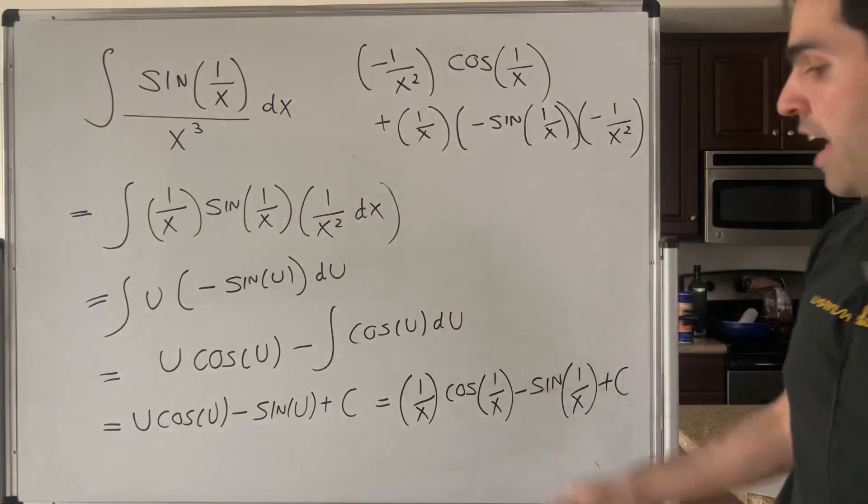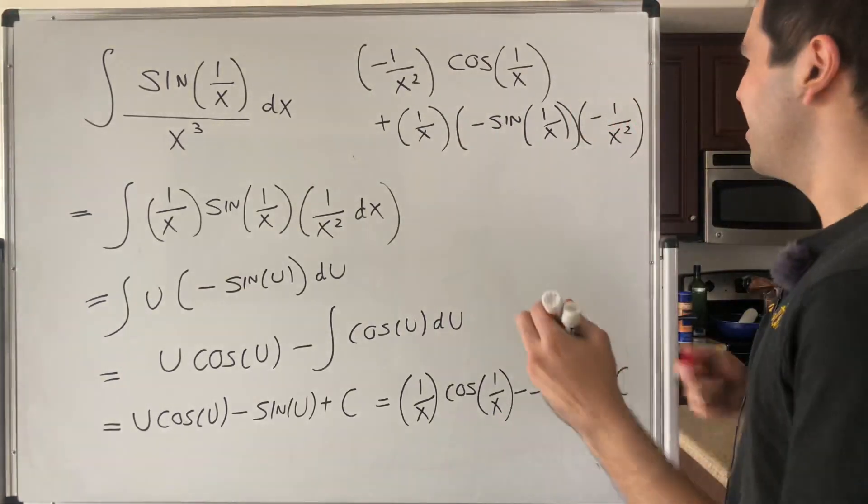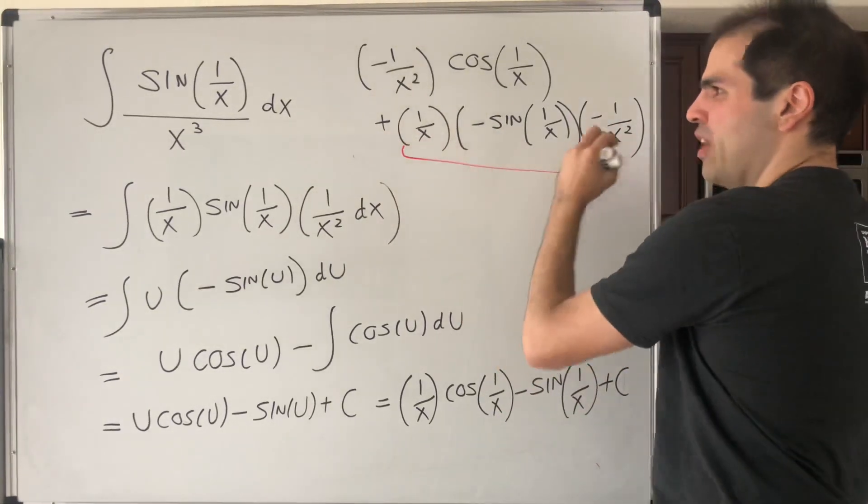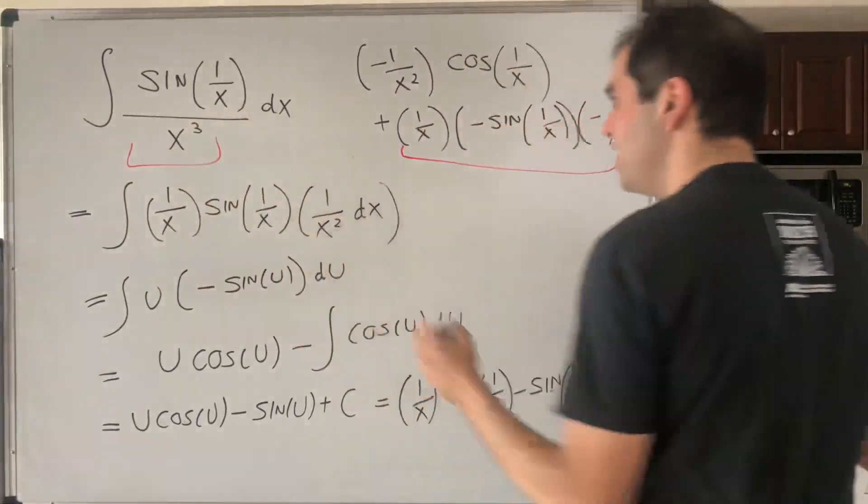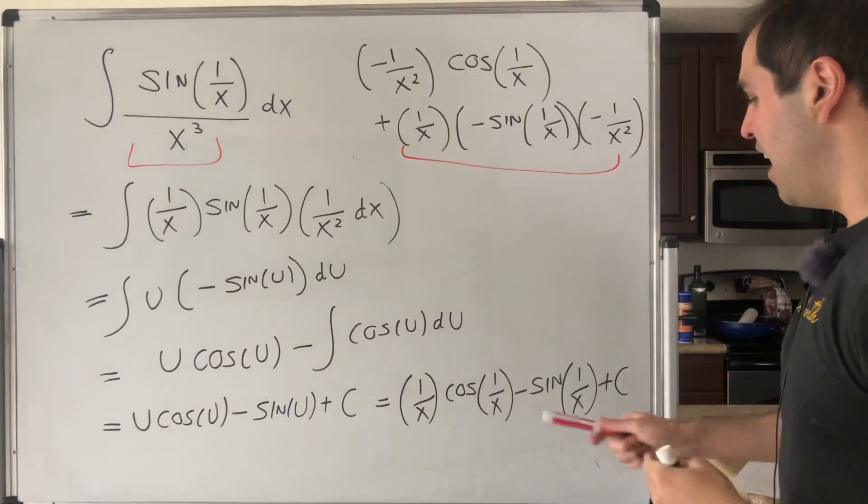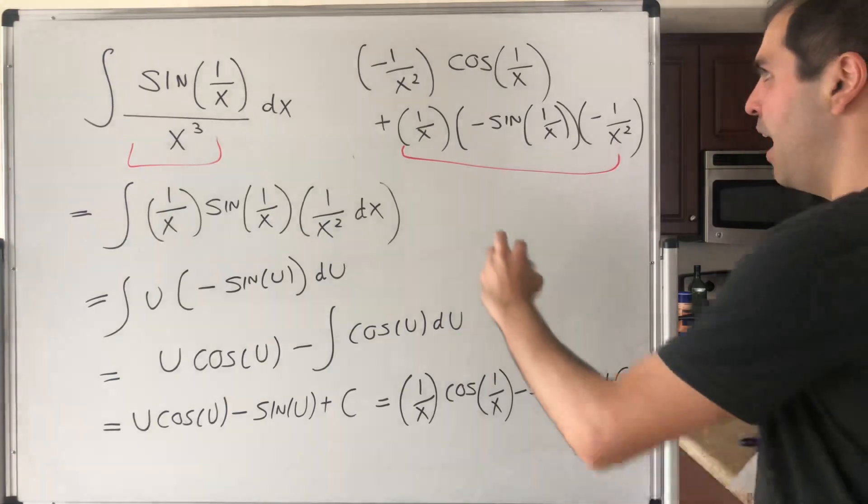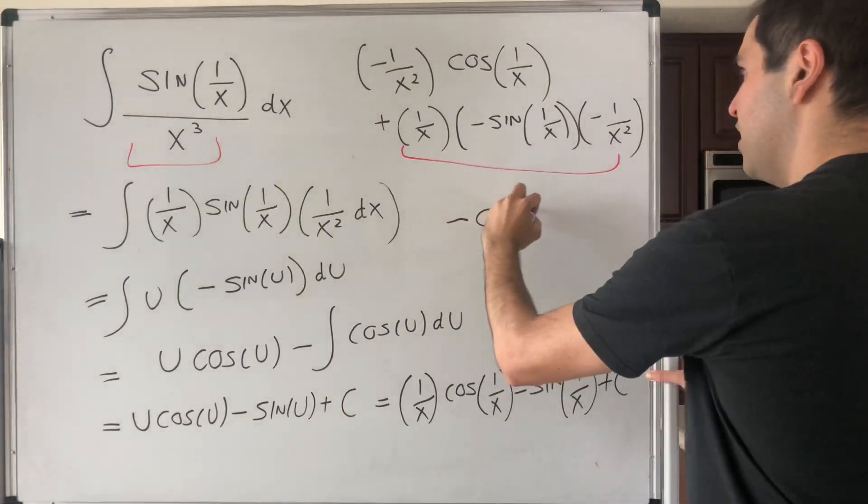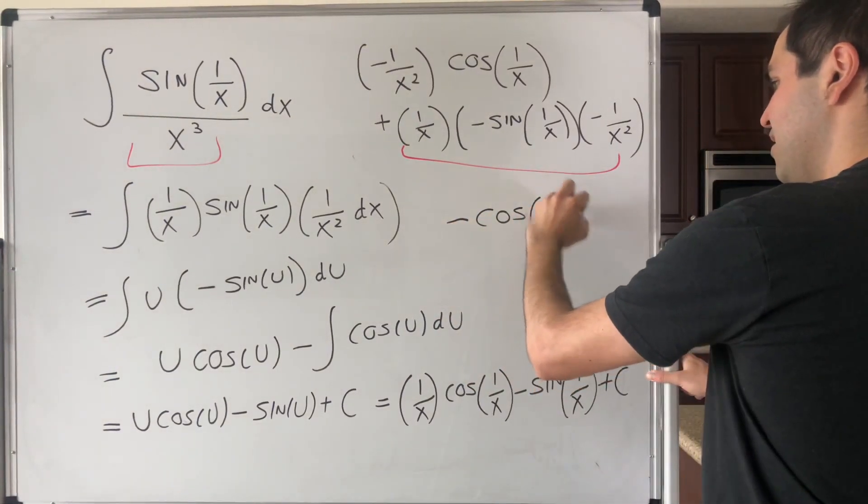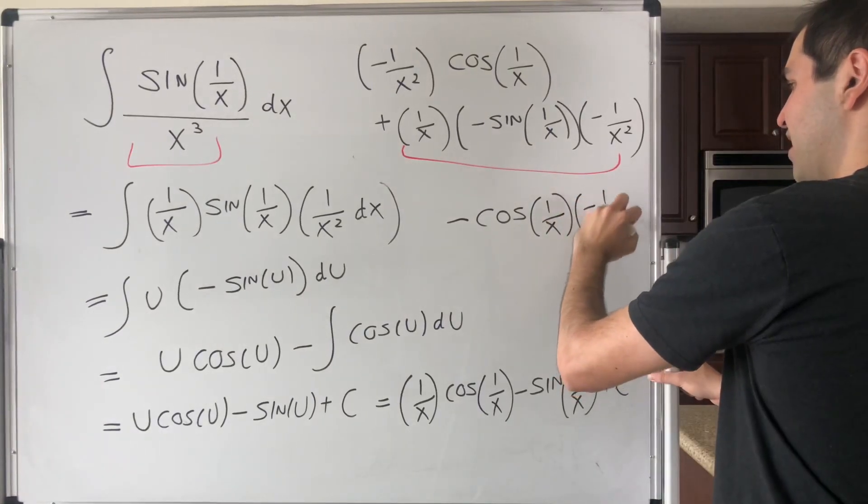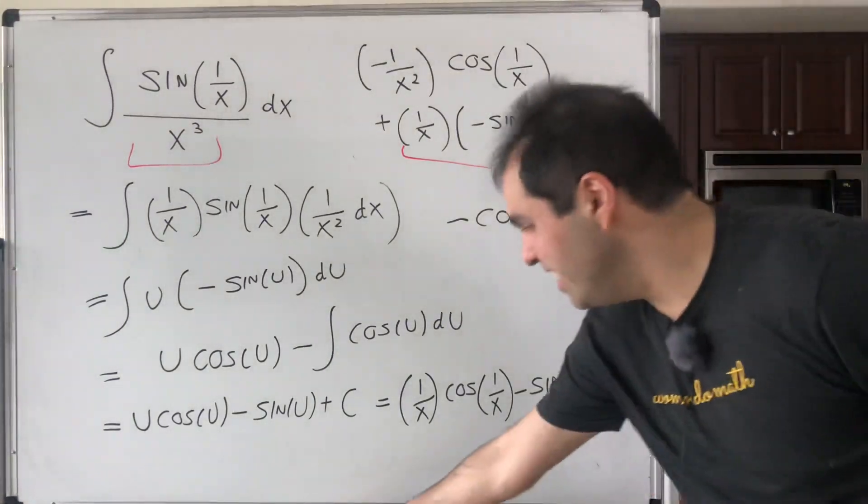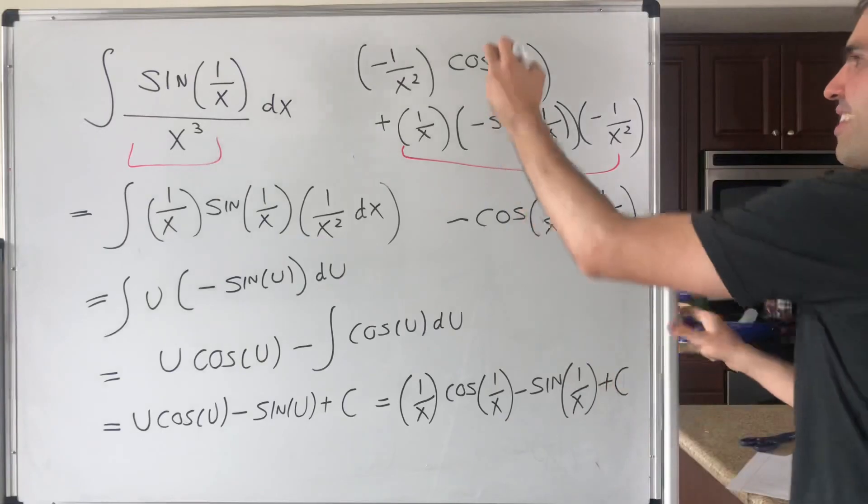which incidentally, or I guess hopefully, becomes 1 over x cubed sine of 1 over x, so our function. And then finally, we have minus cosine of 1 over x times minus 1 over x squared, which conveniently cancels out with this part.